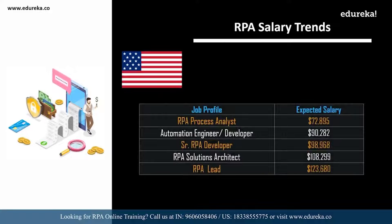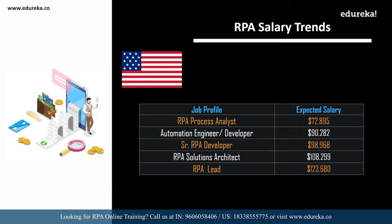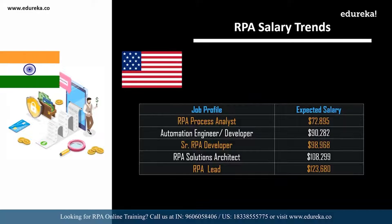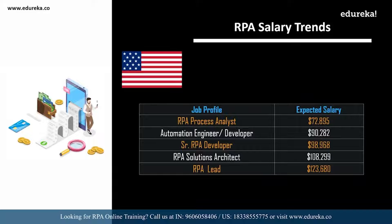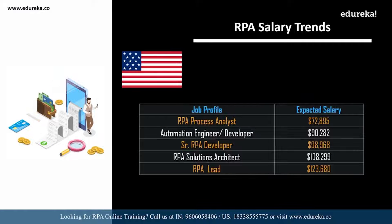Similarly, for the same roles in the USA: an RPA process analyst can expect around 72,000 dollars; an automation engineer or developer around 90,000 dollars; a senior RPA developer around 98,000 dollars; an RPA solutions architect around 100,000 dollars; and an RPA lead around 123,000 dollars. That's a huge amount of money, so this is the right time to start your career in RPA.